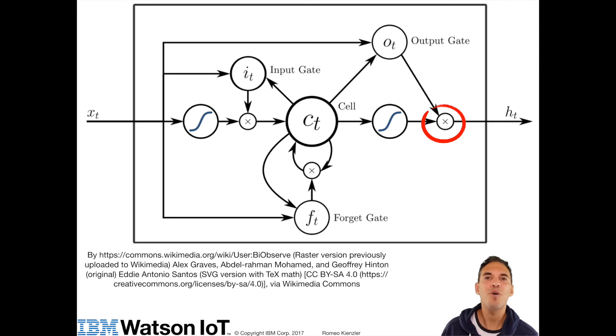So this topology is the initial LSTM proposed by Sepp Hochreiter and Jürgen Schmidhuber in 1997. In 1999 Felix Gers, Jürgen Schmidhuber and Fred Cummins added an additional component, the forget gate.